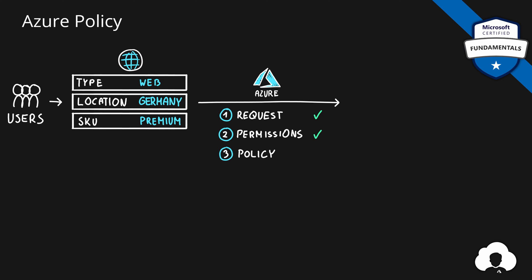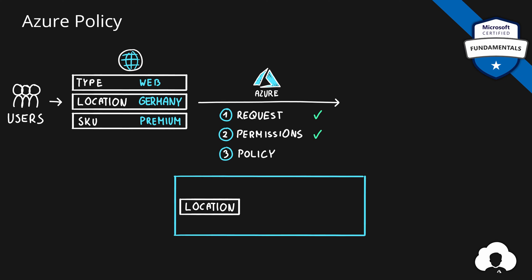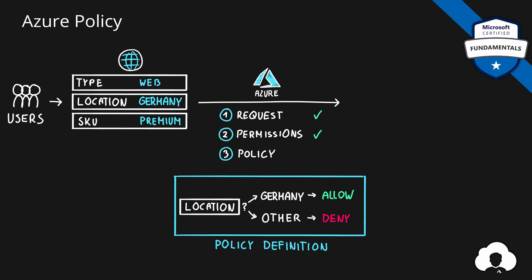To do that, we can create an Azure policy. So we create a policy in which we'll check for certain Azure properties, in this case location. And then we can create a rule and check whether location is Germany, then we can allow for the deployment. But if the value is anything else, then deny that deployment. And this is called a policy definition. In your Azure environment, you can create as many policy definitions as you want in order to match your internal standards.